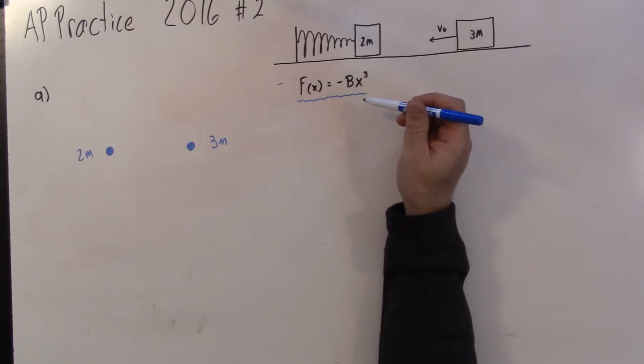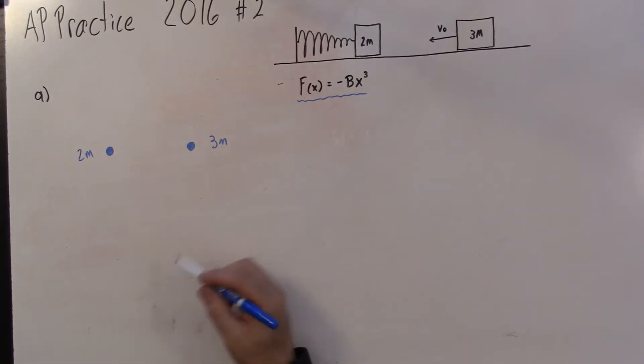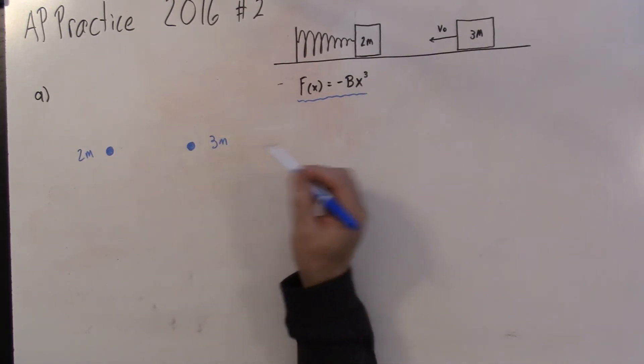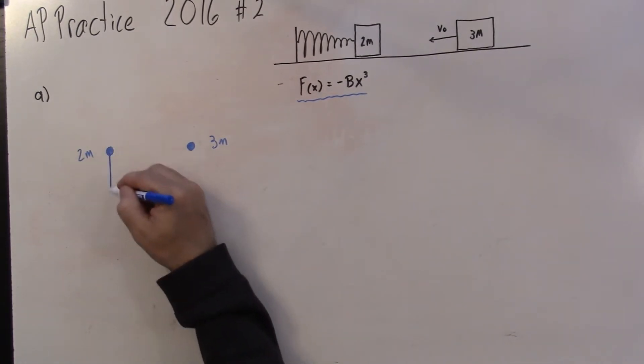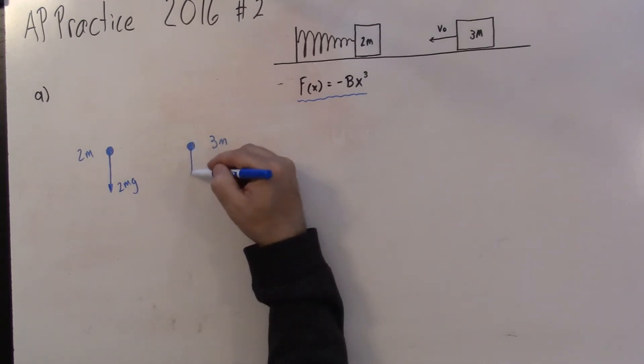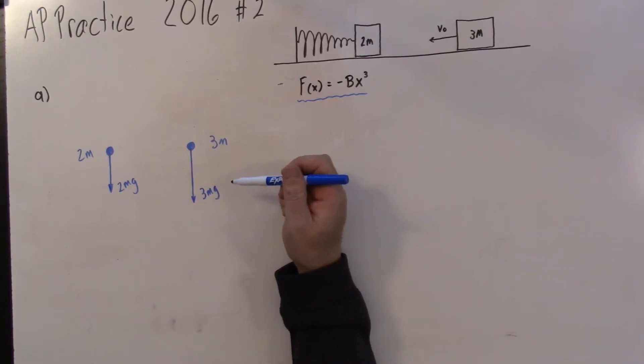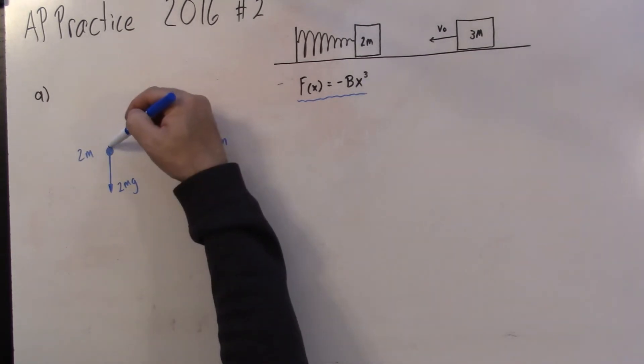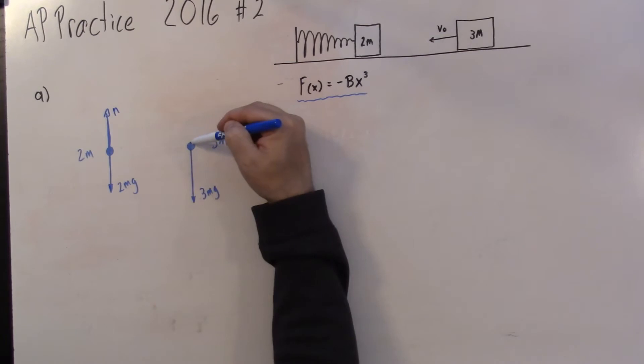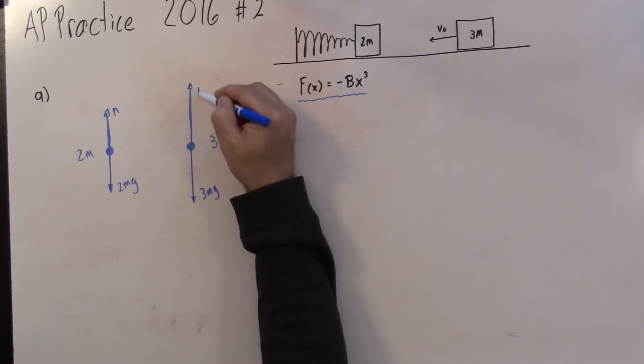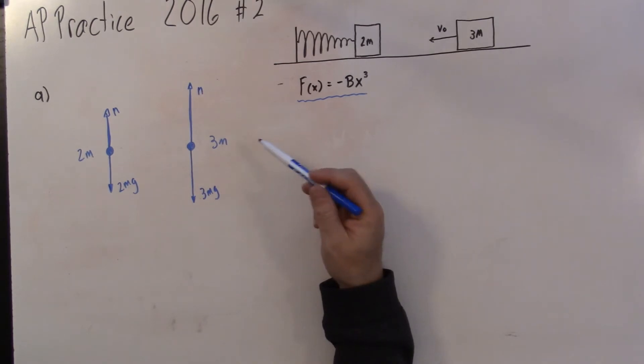The first thing it says is, on the dots which represent the blocks, draw and label force diagrams. No problem. So this is before they collide. What are the forces? Well, this one is the 2m block, so it has 2mg. The earth is pulling it down. This one is then 3mg. When you look at the key, they don't care about the lengths. What other forces are on them? Well, there's got to be some sort of normal force from the table, and the same thing over here. I think that's the only force that we have here.